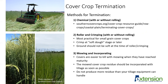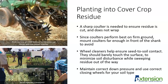Mowing and incorporating is another option for cover crop termination and is more frequently used in organic systems. Cover crops are easier to kill with mowing when they've reached maturity — whether that be grain fill with a small grain cover crop or full bloom with a legume cover. Mowed cover crop residue should be incorporated with tillage as soon as possible, but you want to make sure you don't have more residue than your tillage equipment can handle turning under. The advantage is that you don't have to use chemicals to terminate, but then you don't have that residue on the soil surface to help with moisture storage and weed suppression.